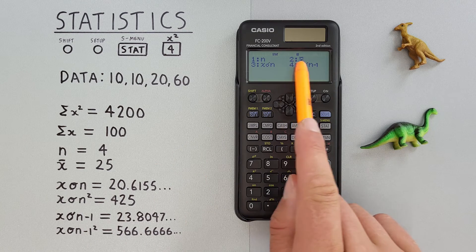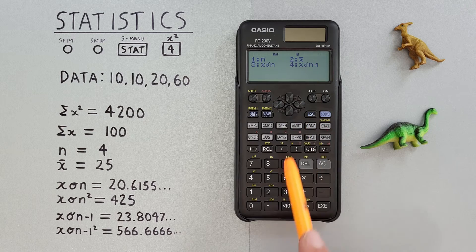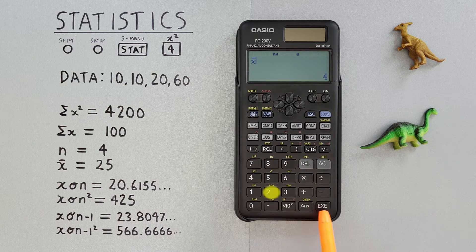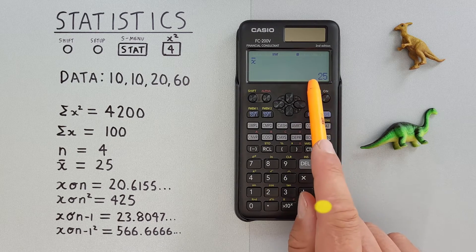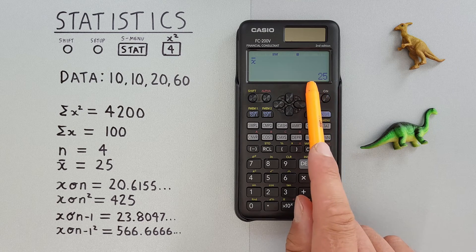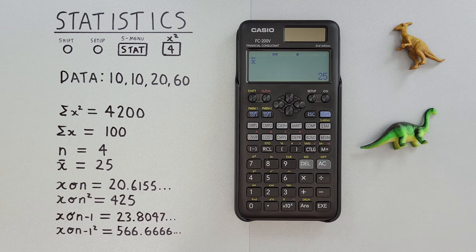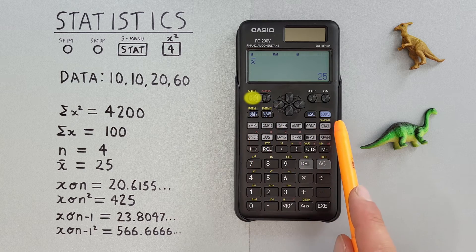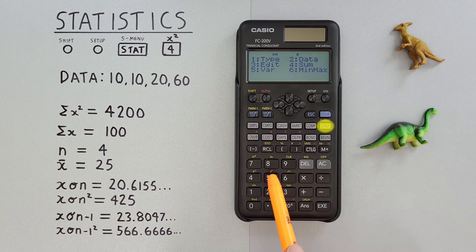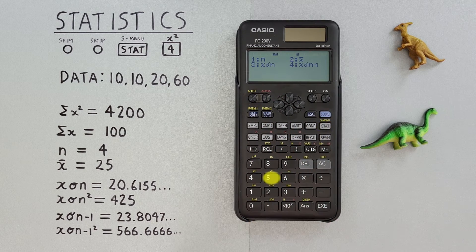Number two in this menu is x̄ or mean. So we select that, and we see we get a mean of our dataset of 25.